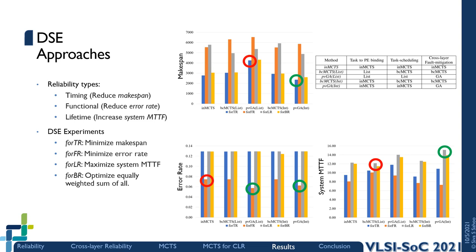For the reliability-aware task mapping, we considered the optimization of three different reliability metrics: makespan, error rate, and system MTTF (mean time to failure). The design space exploration runs included optimizing for each of these metrics separately, and also one in which an equally weighted sum of the metrics was used as the objective. Here you see the results for the design space exploration runs for an application with nearly 100 tasks.